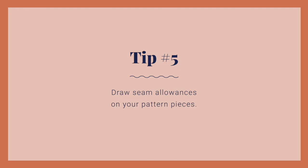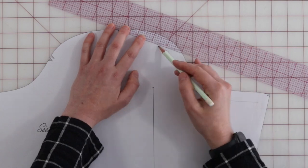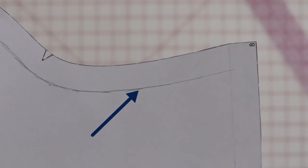Tip number five, draw seam allowances on your pattern pieces. You'll want to draw in the seam allowances on all of the pattern pieces you want to match. The reason for this is that you want your stripes to match at the seam where they're sewn, not at the raw edge.